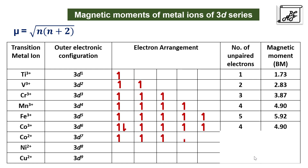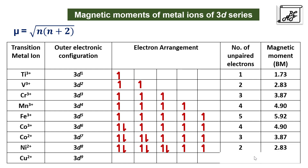For 3d⁷ electronic configuration there are 3 unpaired electrons and the magnetic moment is 3.87. For nickel with 3d⁸ there are 2 unpaired electrons and the magnetic moment is 2.83. For 3d⁹ there is only 1 unpaired electron, so the magnetic moment is 1.73. For Zn²⁺ with 3d¹⁰ there are no unpaired electrons, so the magnetic moment is 0. This is how we calculate the magnetic moments of various transition metal ions.